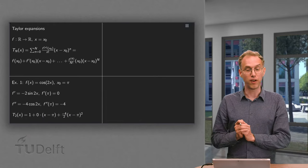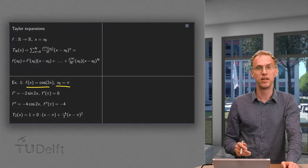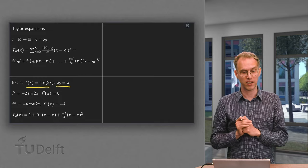So let's do a fast example. Suppose we have cos(2x) and x₀ equals π. Let's do the second order polynomial.